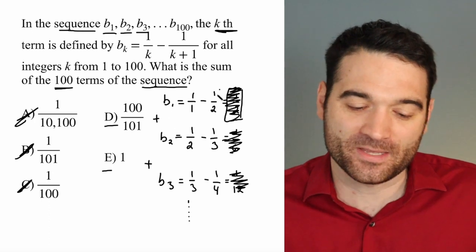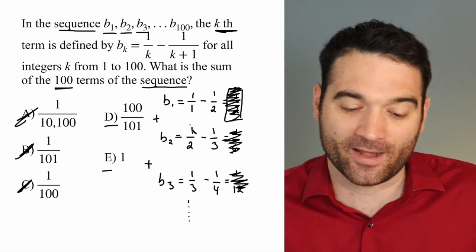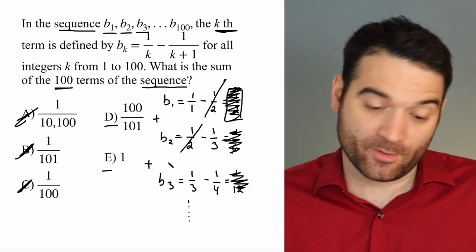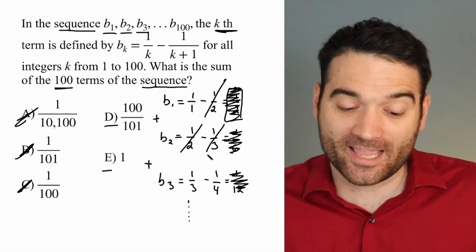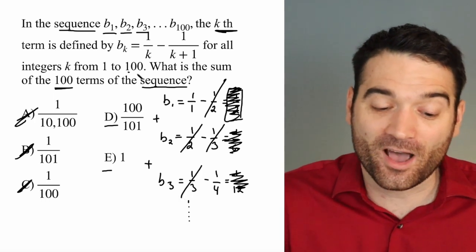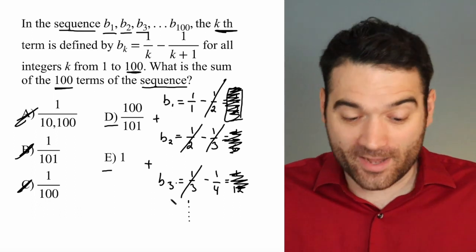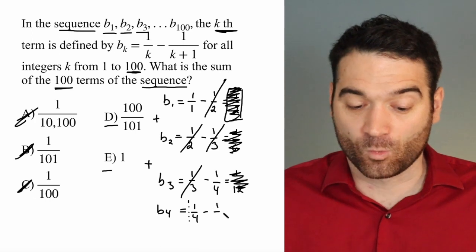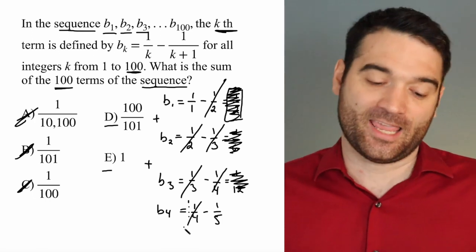When I add B1 to B2, I have negative 1 half right here, and I have 1 half right here. Those are going to cancel out. When I add B2 to B3, or when I add B3 into the mix, negative 1 third is going to cancel out. And this is going to go on and on and on up to the 100th term. We can just write one more here. B4 is equal to 1 fourth minus 1 over 5. So that's going to cancel out.